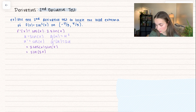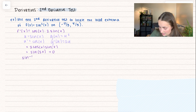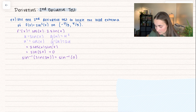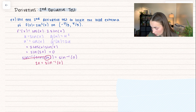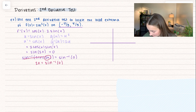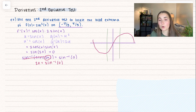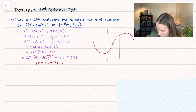We want to find local extrema, so we set this equal to 0. Taking inverse sine of both sides, the inverse sine and sine cancel, leaving 2x equals inverse sine of 0. Sine equals 0 at 0 on our interval, so 2x equals 0, which gives us our critical point x equals 0.